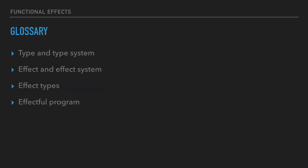So first, what do we have to understand? At least in my understanding, we should know what is a type and type system, what is an effect, what is an effect system, what are the effect types, and what does it mean that a program is effectful. I think those are the base concepts, and of course we'll only scratch the surface.